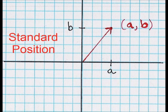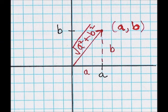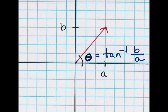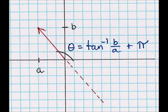Emanating from the origin. Standard position: (a, b). Length is the square root of a squared plus b squared. Direction: tangent inverse of b over a. But you might need to add pi to get the quadrant right.